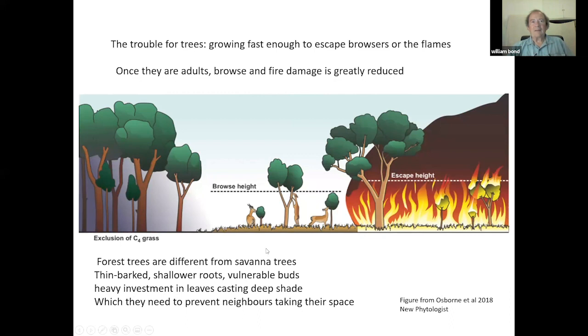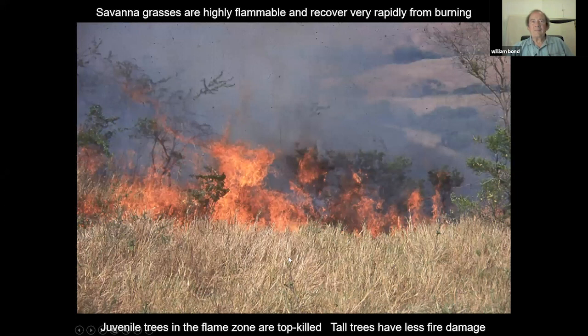Forest trees cast a lot of shade — utterly different from a savannah tree that allows light through so grasses can grow perfectly well underneath. For a small savannah tree below the flame zone, the above-ground parts get killed in a fire, though the plant usually re-sprouts. The challenge is getting high enough to escape. Forest trees are very poor at getting through that flame zone; savannah trees have learned some tricks to do so.